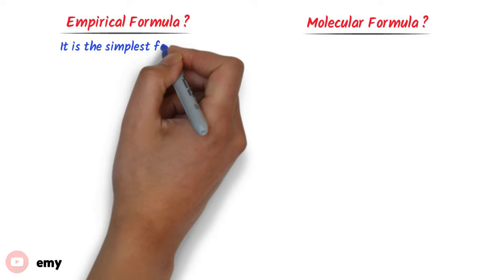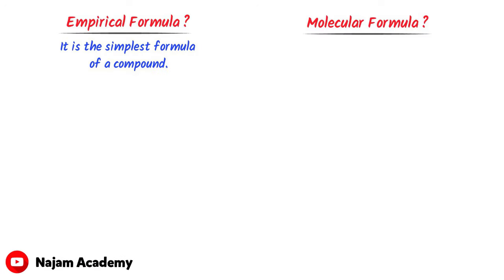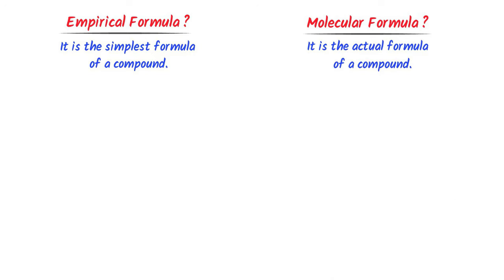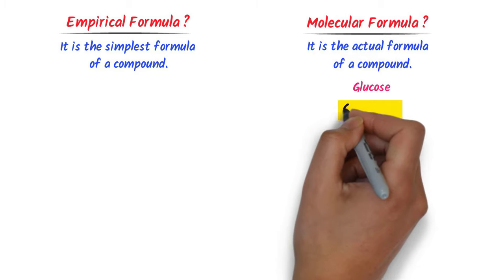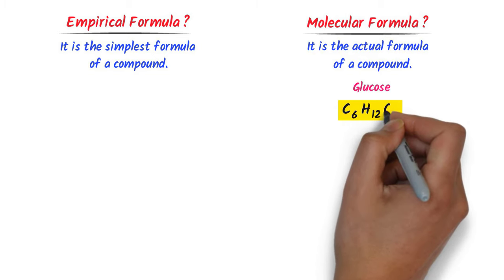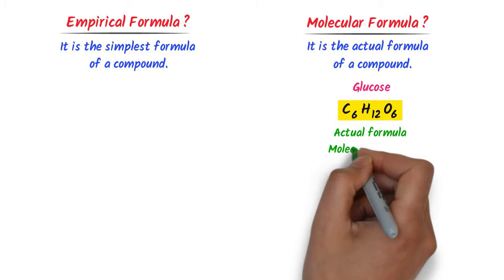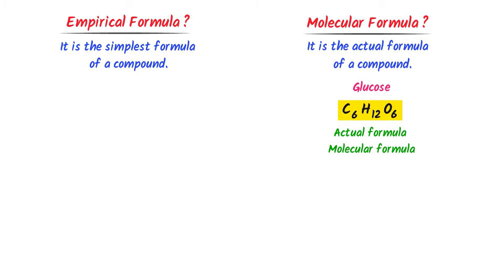What is empirical formula and what is molecular formula? Empirical formula is the simplest formula of a compound, while molecular formula is the actual formula of a compound. For example, the formula of glucose is C6H12O6. This is the actual formula of glucose, hence it is the molecular formula of glucose.